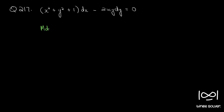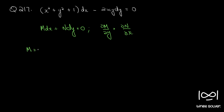The given differential equation is in the form M dx plus N dy equals 0. We first check whether it is exact using the necessary and sufficient condition: ∂M/∂y equals ∂N/∂x. Here M is x² + y² + 1 and N is −2xy.